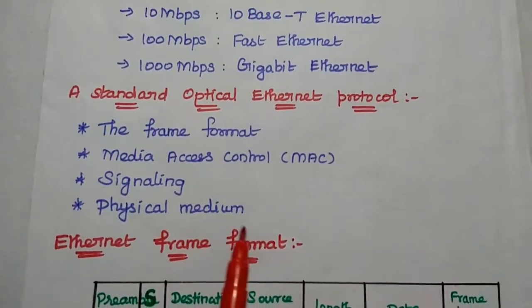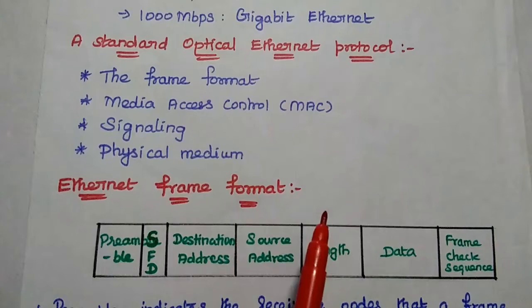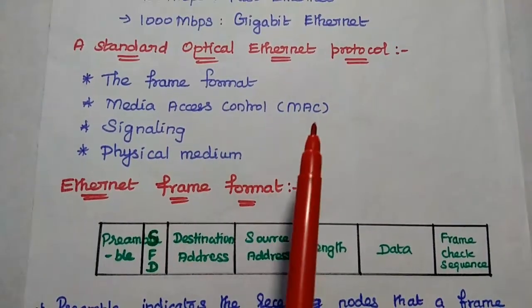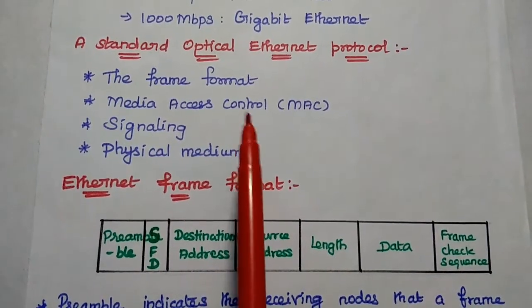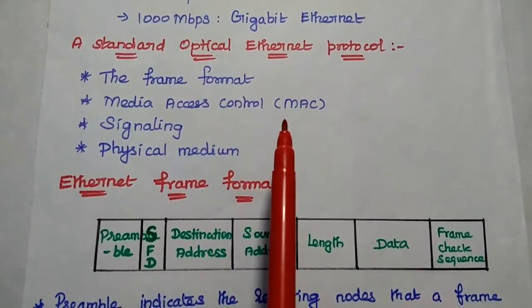A standard Optical Ethernet protocol consists of the following important elements: the frame format, media access control (MAC protocol), signaling, and physical medium. These four are very important elements for any Ethernet protocol.